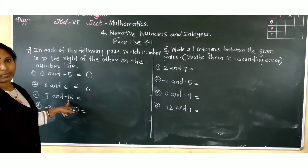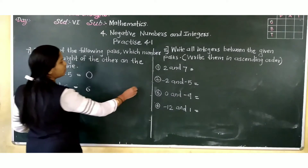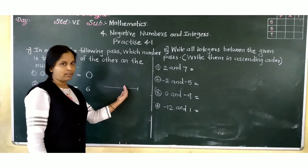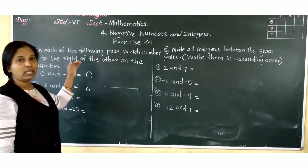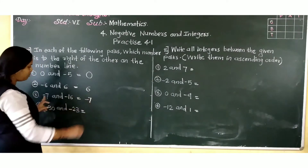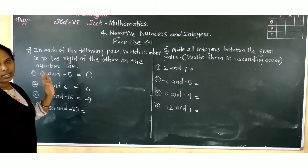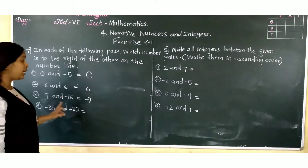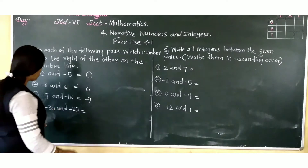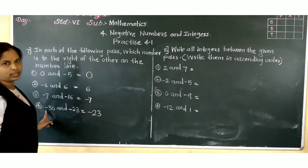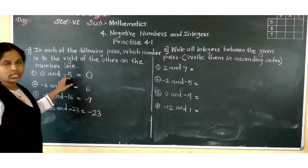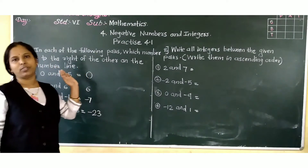Now minus 7 and minus 16: as we move towards the left side, the value keeps decreasing. So minus 7 comes before minus 16, meaning minus 16 will be less than minus 7. So who will be to the right side? Who is greater? Minus 7 is greater, so minus 7 is to the right of minus 16. Similarly, minus 23 is greater than minus 30, so minus 23 will be to the right of minus 30. In short, we have to compare the two integers; whichever is greater will be to the right side.